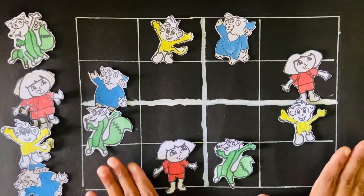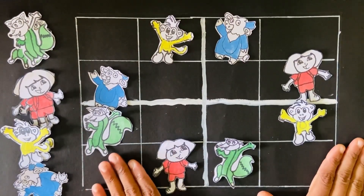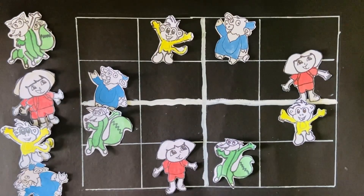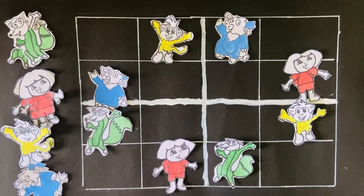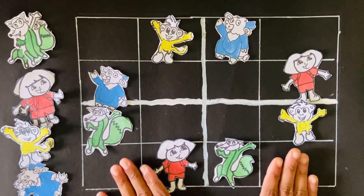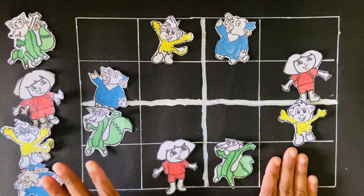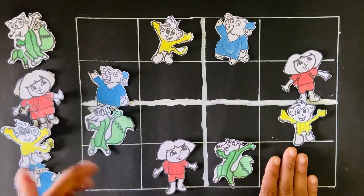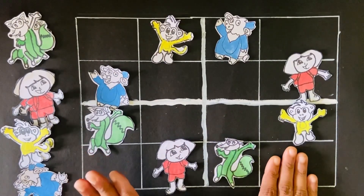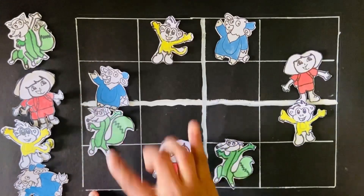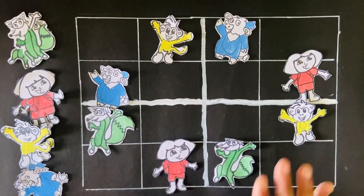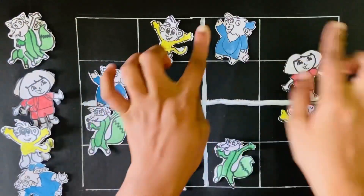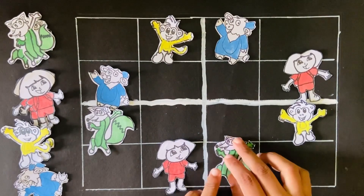So, kids, this is the game. I have already placed some characters. Let's see how to solve this 4x4 Sudoku with these 4 characters. You have remembered all the rules and regulations, right? Each row and column should not get repeated, and also each square should not get repeated.